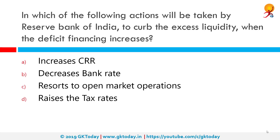Which action will be taken by the Reserve Bank of India to curb excess liquidity when deficit financing increases? The correct answer is increasing CRR. If the RBI hikes CRR substantially, banks will have to increase loan interest rates. A hike in CRR leads to an increase of interest rates on loans. Reduction in CRR releases money into the system, while an increase sucks money out, causing a decrease in money supply and bringing inflation down.